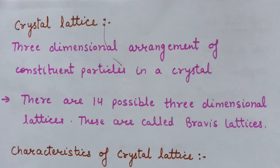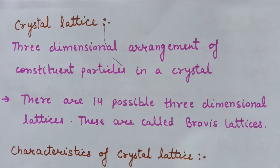In Lecture No. 1, we discussed the classification of crystalline solids and the difference between crystalline and amorphous solids. Now, next is crystal lattices and unit cells. First of all, we need to know what is a crystal lattice.